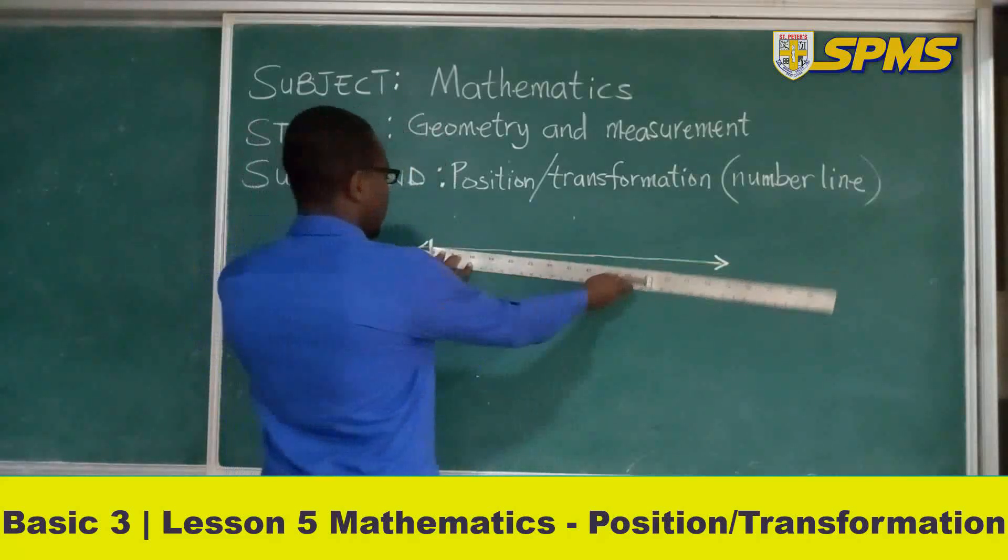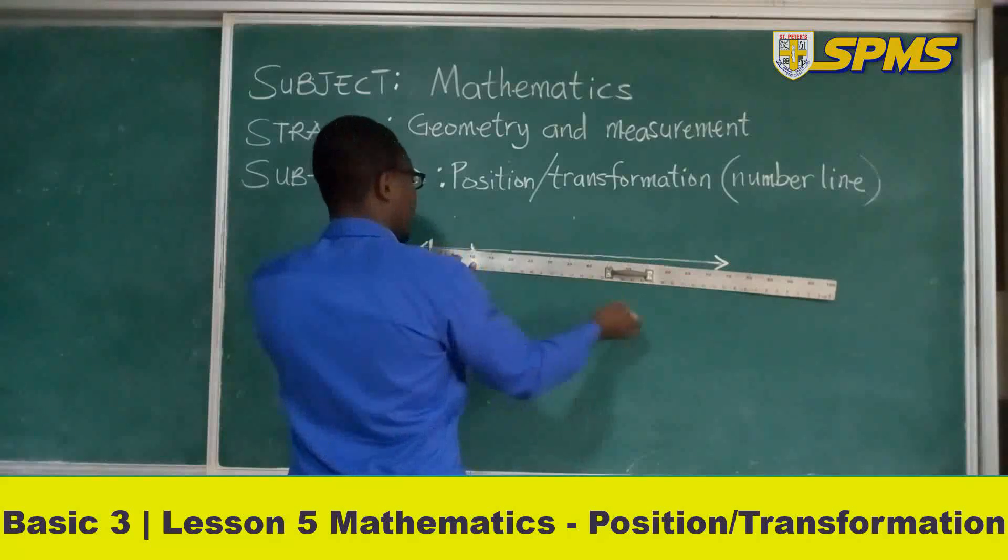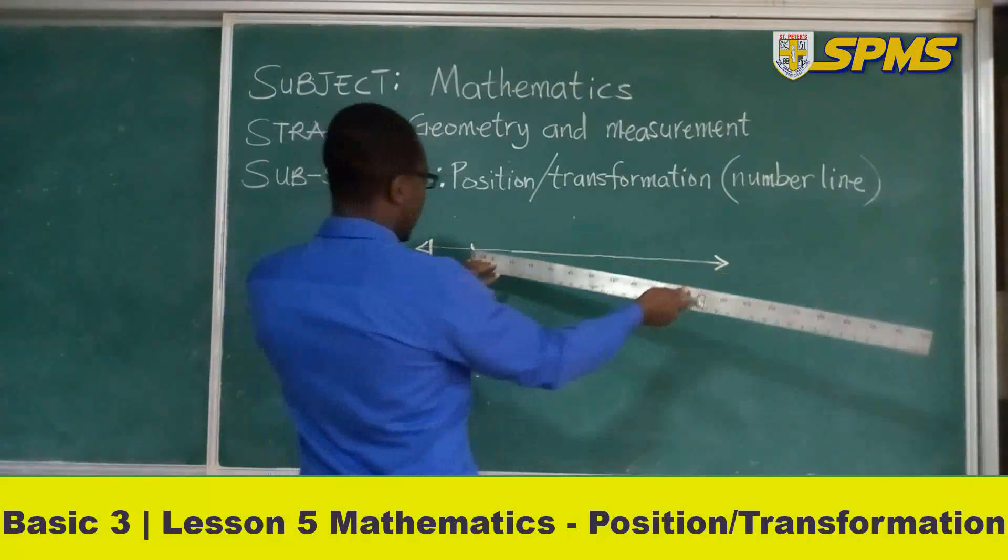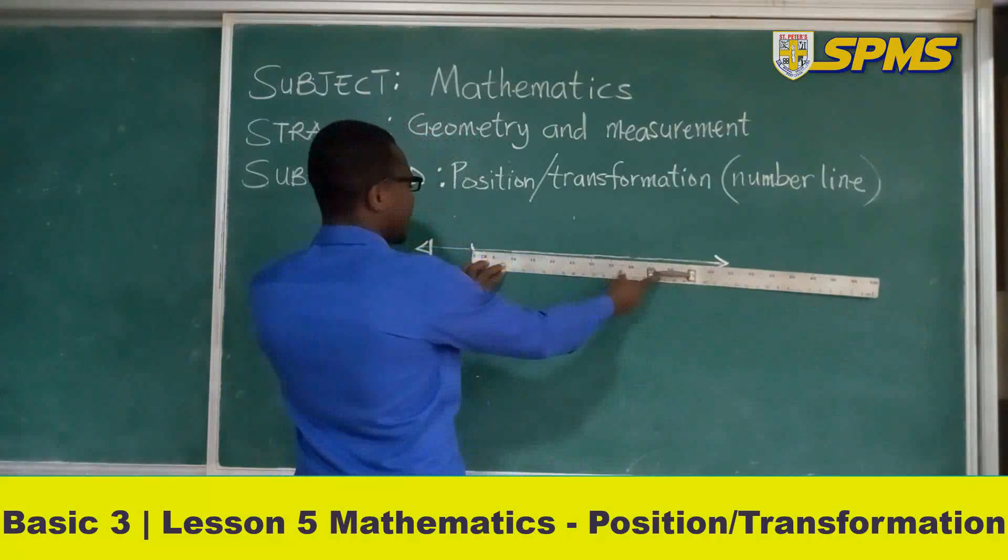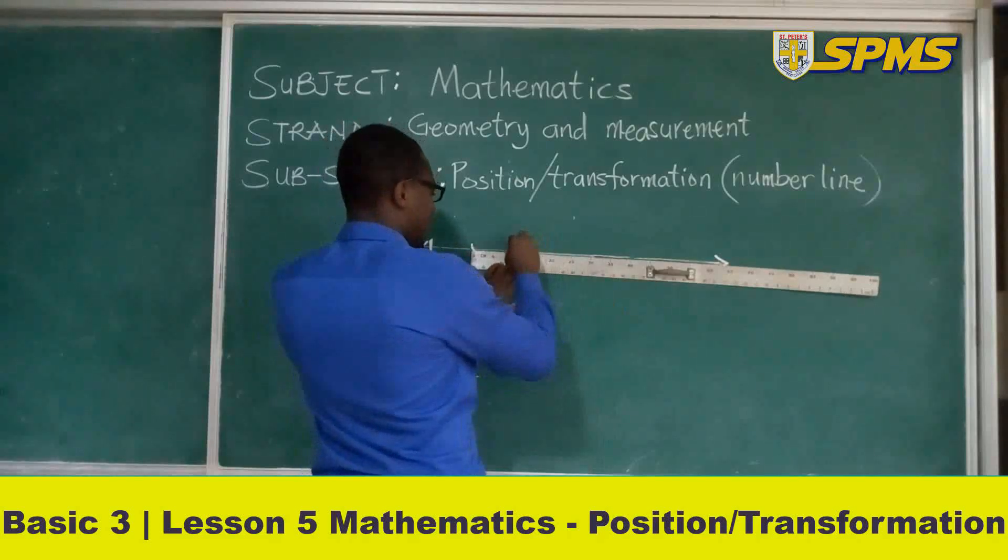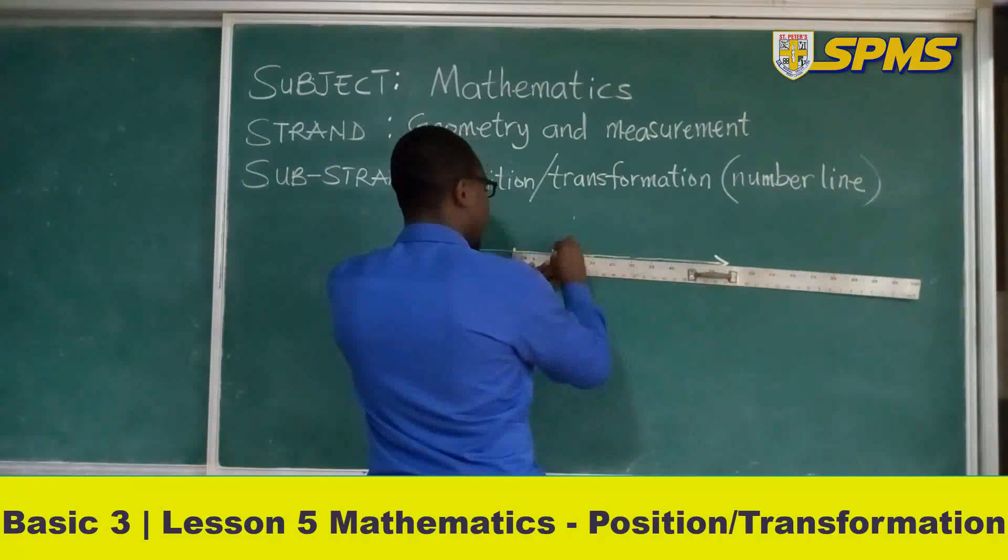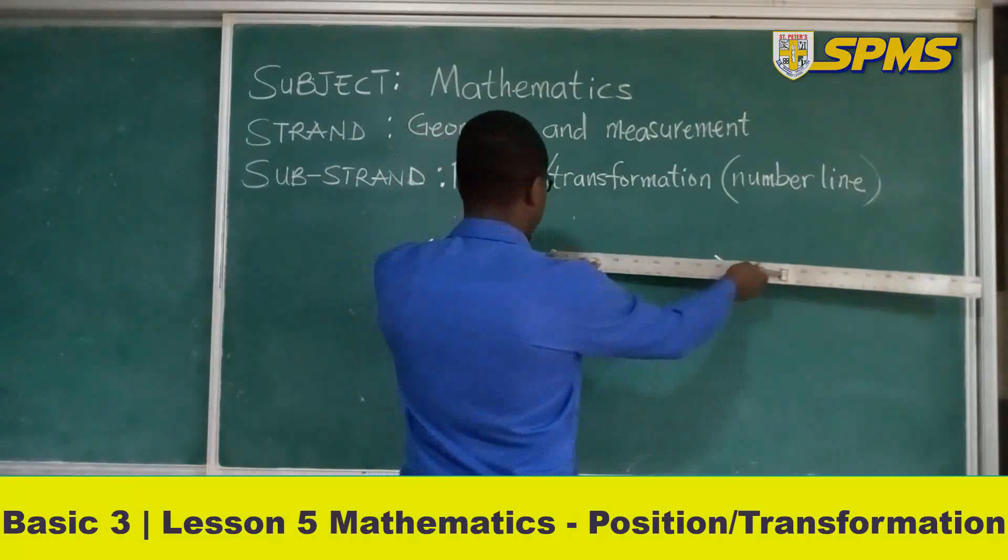So from 0 to 10, then I will have a point on my number line. Then for the next one, I place the 0 end of it on the point I made. Then I indicate another point. So I have two points now. So I continue like that with my 10 cm on the line.